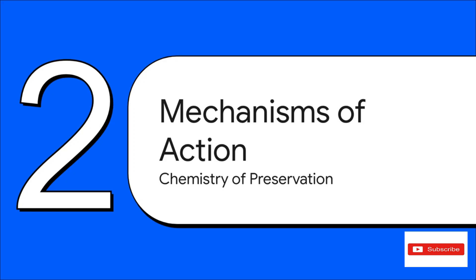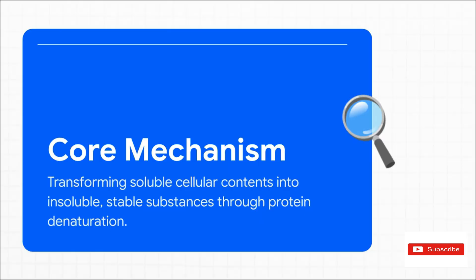Welcome to section two, mechanisms of action. Now we're going to put on our chemistry hats for a bit to understand the really elegant molecular processes that make all of this possible. The whole entire process hinges on one single concept, protein denaturation. In simple terms, fixatives take the soluble, almost liquid-like proteins inside our cells, and they transform them into insoluble, solid structures. This change is what stops them from dissolving away during later steps, creating a permanent, readable scaffold of the cell's architecture.